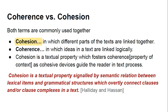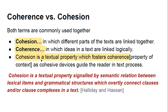In coherence, we bind the text logically so that it gives meaning. Cohesion is a textual property that fosters coherence. Coherence is the property of context. Cohesion is brought about as cohesive devices guide the reader through the text.